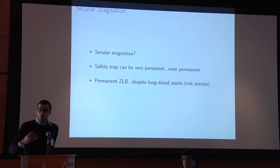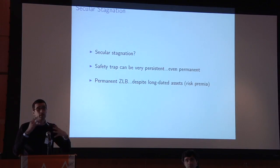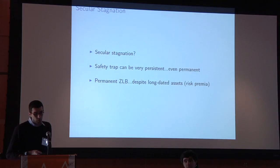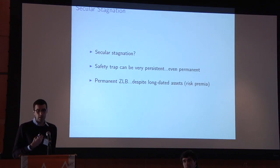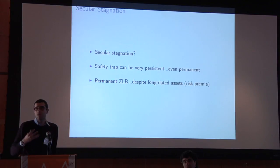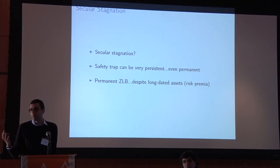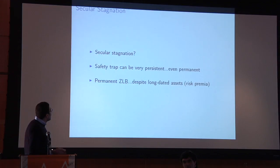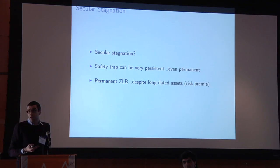So that's how it works — you get a recession and you can connect all the facts I mentioned in the introduction. How does this connect with secular stagnation? Secular stagnation is the idea that we can be at the zero lower bound with a recession for a very long time — maybe forever. In this environment, the safety trap can be very persistent; actually it can be permanent.